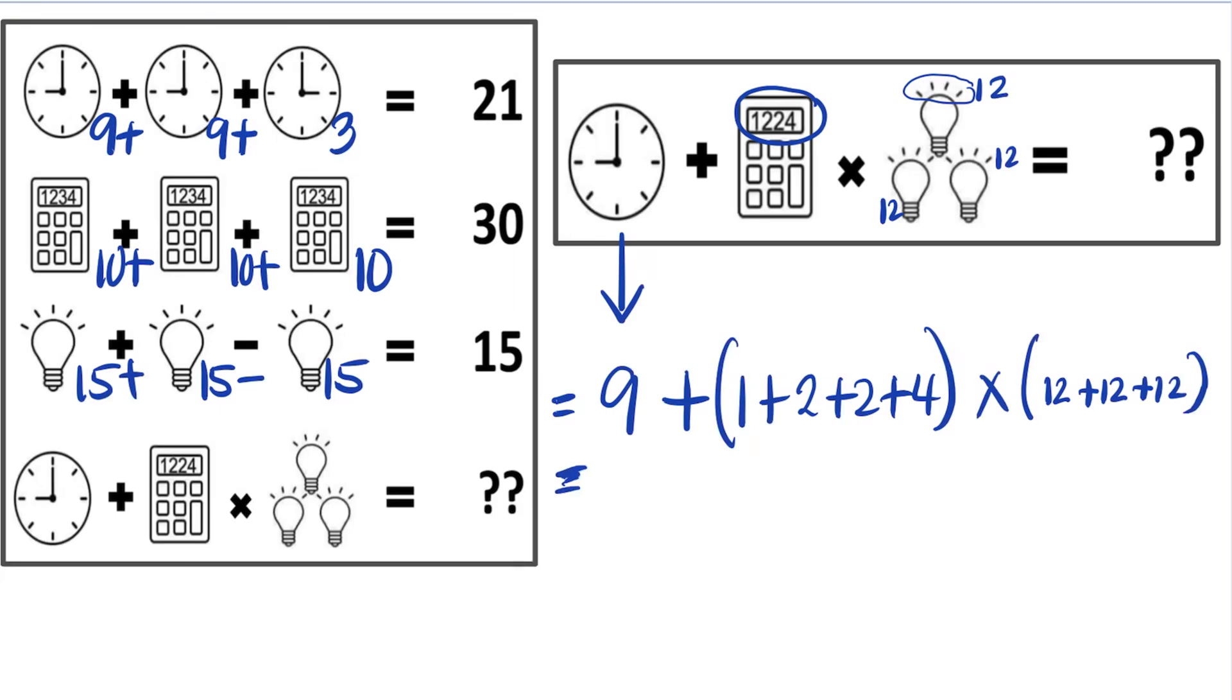Simplifying this, we have 9 plus the quantity 1 plus 2 plus 2 plus 4, times the quantity 12 plus 12 plus 12. That's 9 plus 9 times 36. Using the order of operations, we need to simplify 9 times 36 first, and 9 times 36 is 324. Now we add 9 to that 324, so the answer is 333.